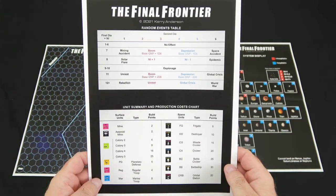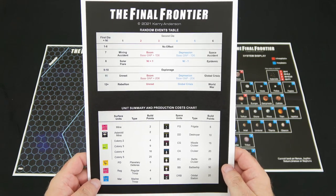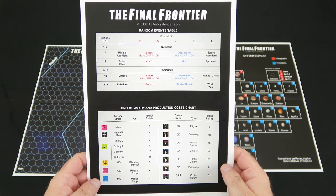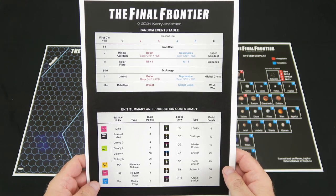And then on the next sheet, we have the random events table. You'll roll some dice, and you'll cross-reference it to see what event takes place. At the bottom, you have the unit summary and production cost chart for both ground-based and space-based units.